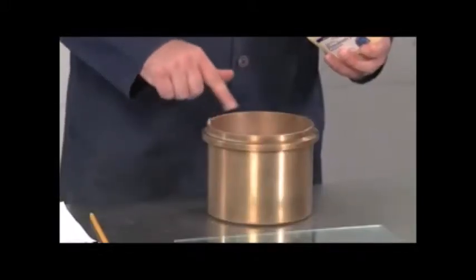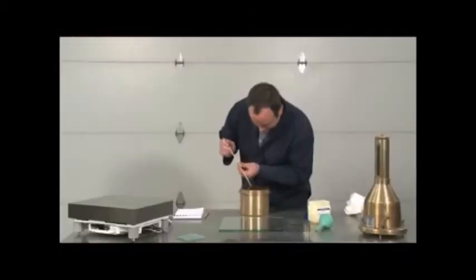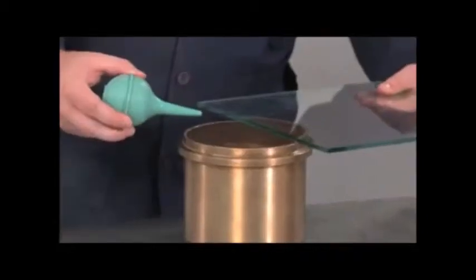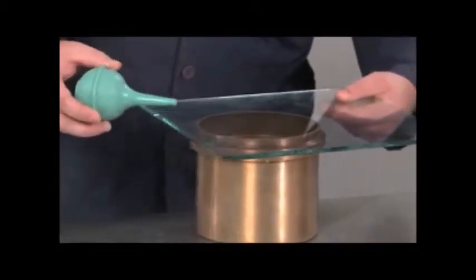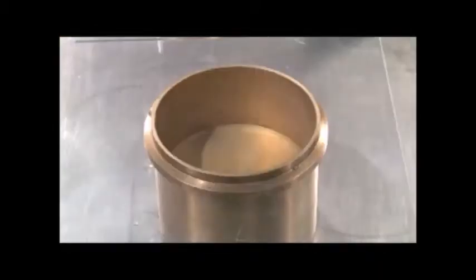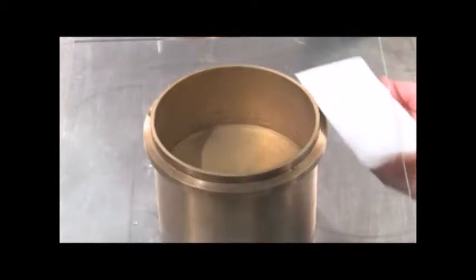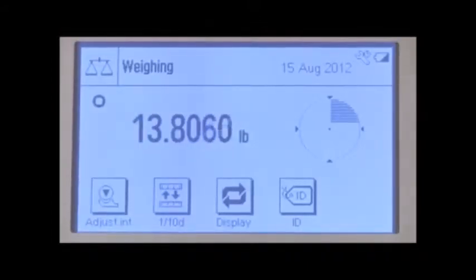Place a thin layer of grease on the rim to create a seal between the glass and the bowl. Completely fill the bowl with water and record the water temperature to one degree Fahrenheit. Slide the glass plate over the top of the bowl, creating a seal around the rim. The use of a bulb syringe will aid accurate filling. Make certain there are no air bubbles trapped beneath the glass.